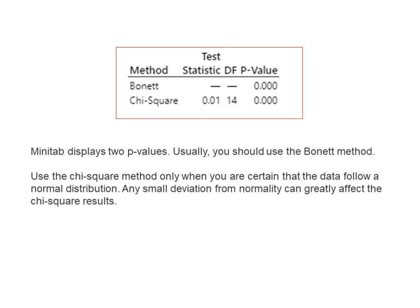Minitab displays two p-values. Usually, you should use the Bonett method. Use the chi-square method only when you are certain that the data follow a normal distribution. Any small deviation from normality can greatly affect the chi-square results.